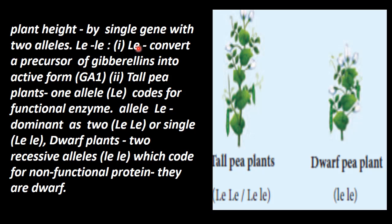Capital LE and small LE — this is dominant. So, tall plants will have a genotype of LE and LE, or both alleles as capital LE and small LE. This is dominant, so both of these genotypes will produce tall plants by converting the precursor of Gibberellin hormone into its active form.